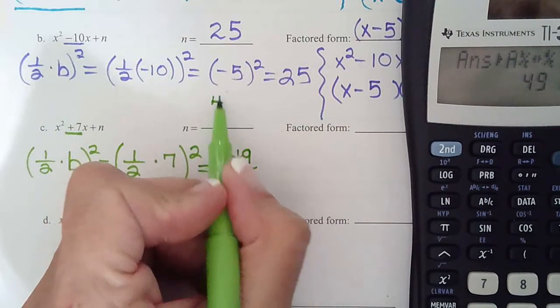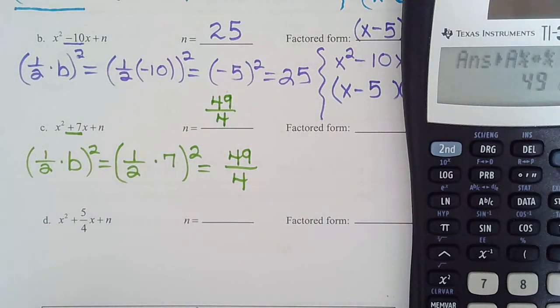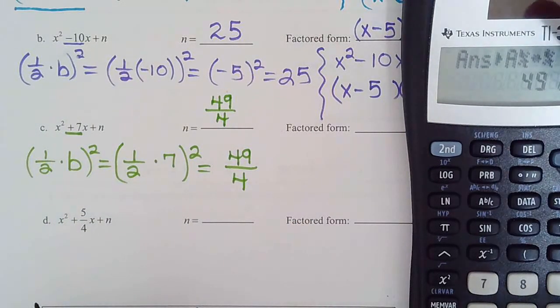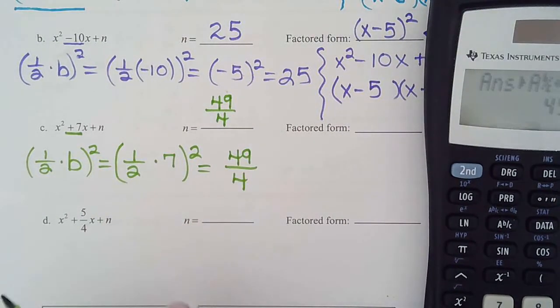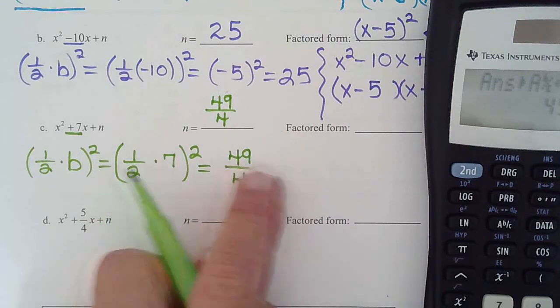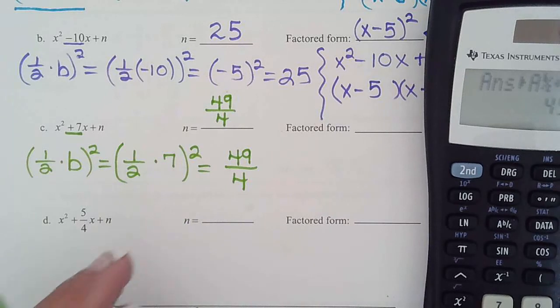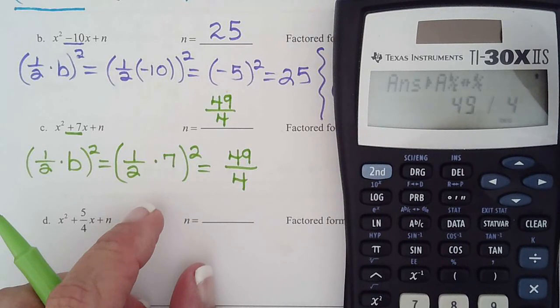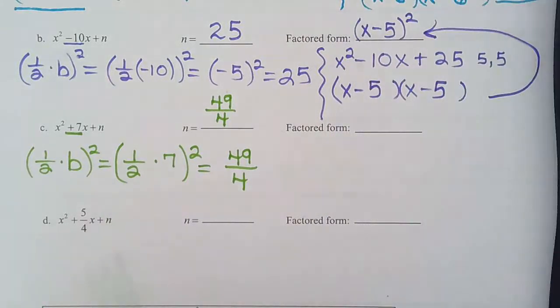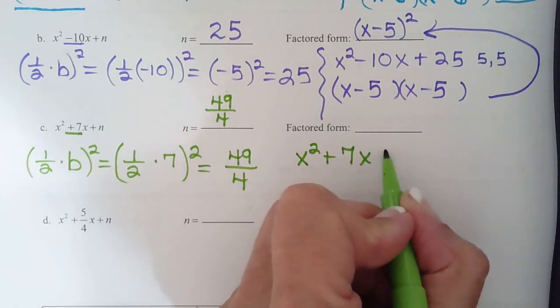And the reason we want it written like that is because we're going to be taking the square root on the next problem. In order to take the square root, we need it as a fraction. Square root of 49 is 7, square root of 4 is 2. So that's why we write it as an improper fraction rather than as a decimal. So let's write our new problem and then we'll finish it on the next video.